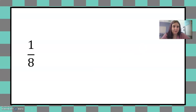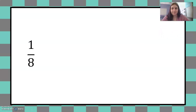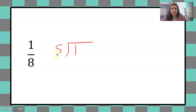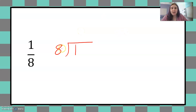Let's start with an example: one eighth. So one is the dividend. We're taking one and dividing it into eight groups. We put our one inside of the fraction bar box and eight goes on the outside. Now one eighth is less than one, so I know that this number is going to be a decimal number less than one. Eight does not go into one.